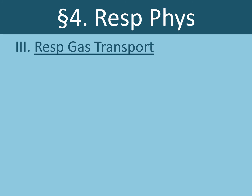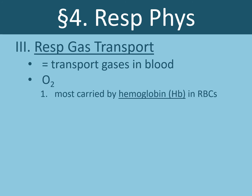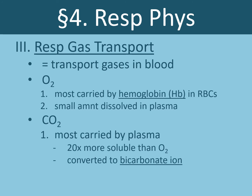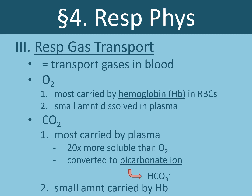The third component of respiration is respiratory gas transport — the transport of gases in the blood. Oxygen is mostly carried by the protein hemoglobin, abbreviated Hb, which is found in our red blood cells. A small amount of oxygen is dissolved directly in the blood plasma. In contrast, CO2 is mostly carried in the blood plasma because CO2 is far more soluble than oxygen. Within the plasma, CO2 is converted into bicarbonate ion (HCO3⁻). A small amount of CO2 is also carried by hemoglobin.